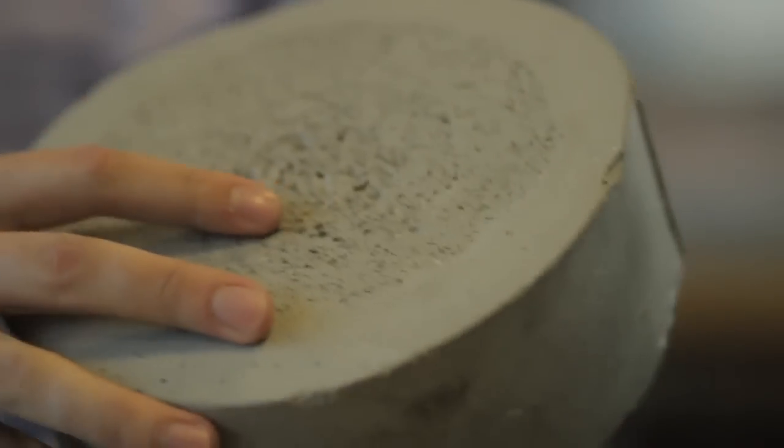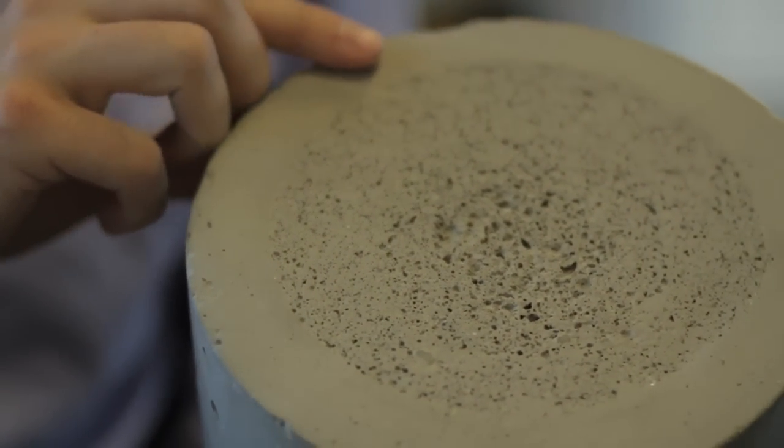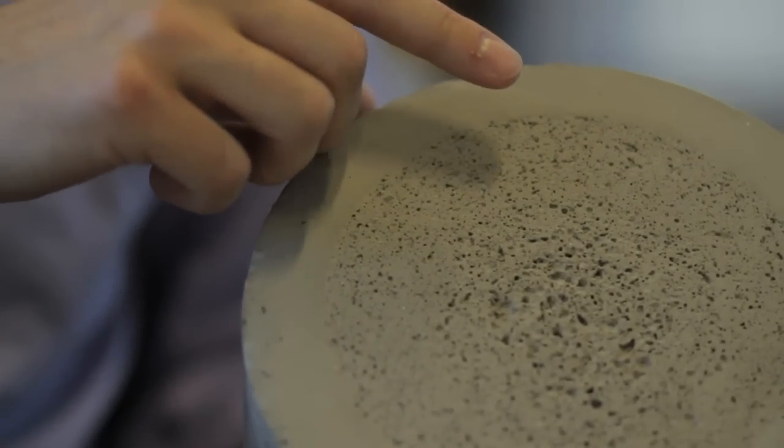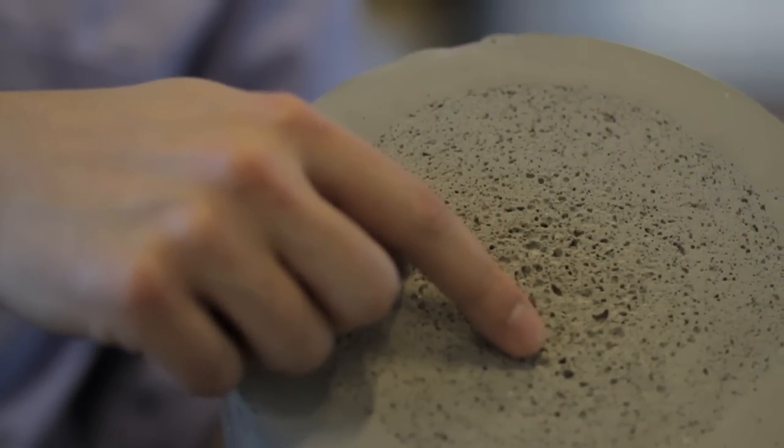Or we're looking at working with concrete and making extruder heads that can control the density of the concrete as it comes out. Here's a sample which shows a functional gradient of density in concrete. As we move from the rim to the core, we actually see a decrease in density from a solid structure to a much more cellular structure.